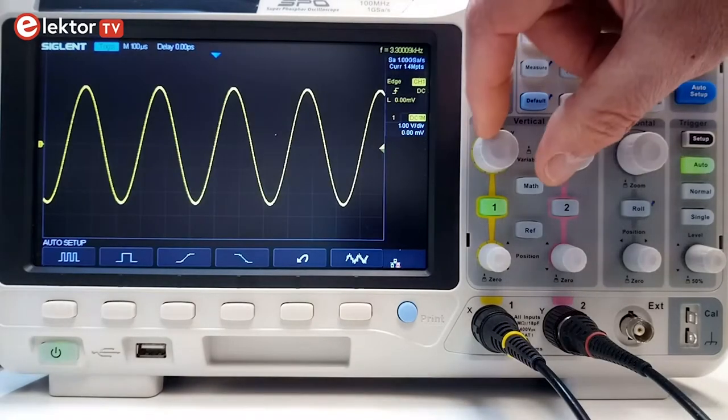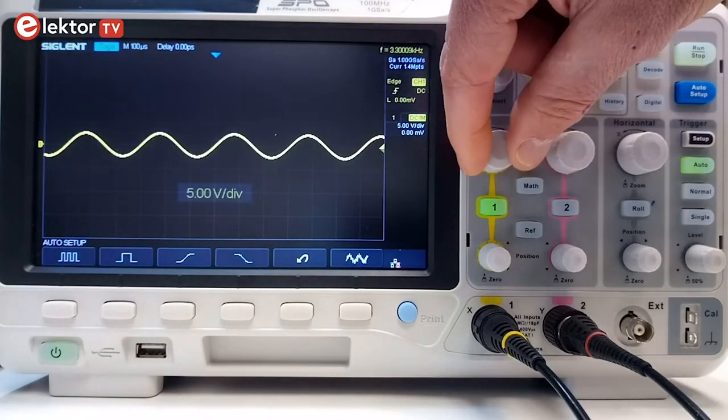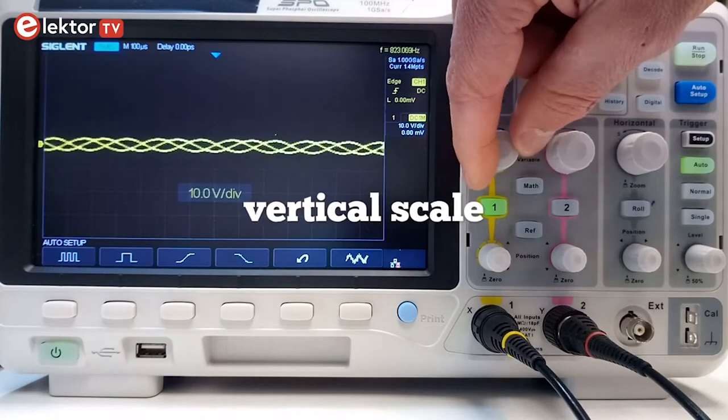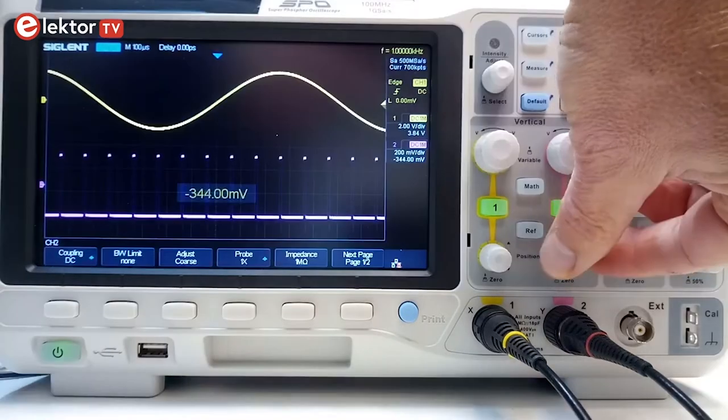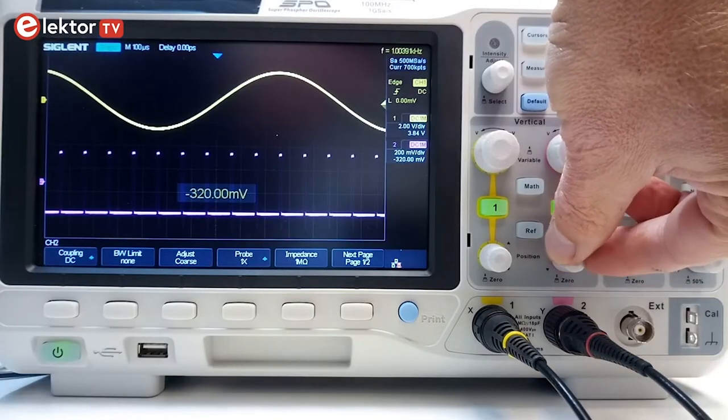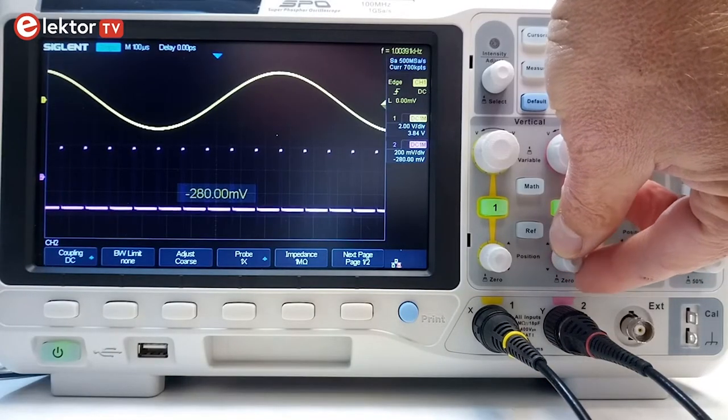But first let us look at the section vertical. This section lets you amplify or attenuate the input voltage or input signal, meaning that you can adjust its amplitude, and you can also adjust its vertical position. This can be set independently for every input channel.